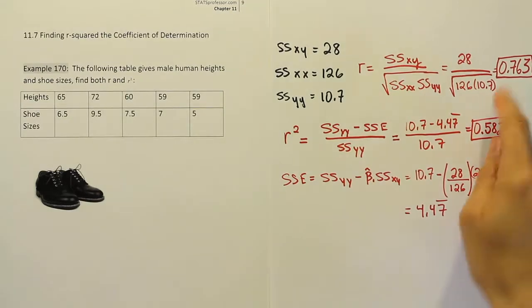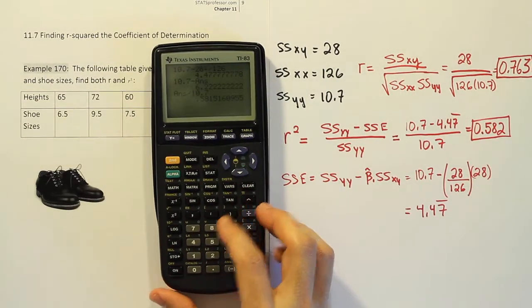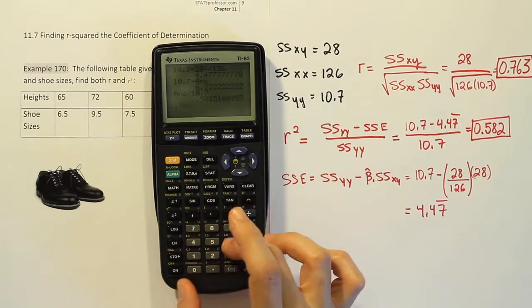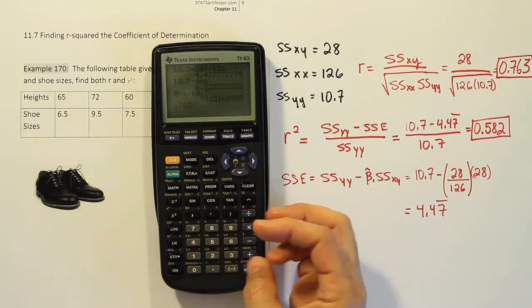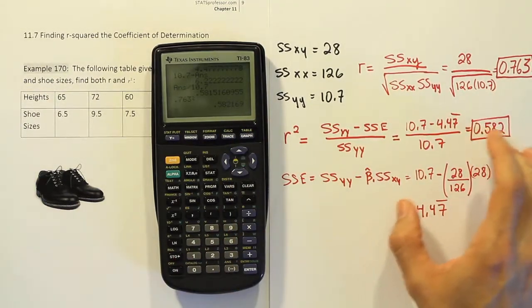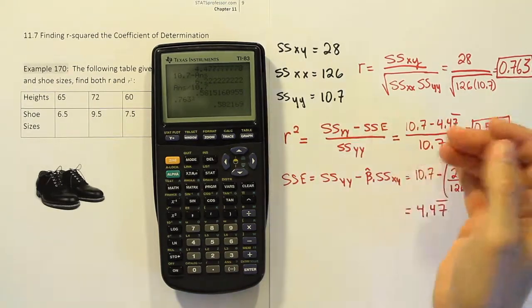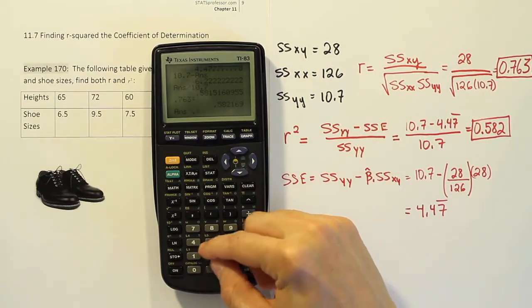Finally, last thing I want to mention is, of course, if we had squared r like we talked about before, we would get the same value. Remember, r is .763. That's a little rounded, of course, but if we square it, we see that we get .582 to three decimal places, which of course is the same answer as r squared. Likewise, if you have r squared, you could just take the square root of it, and you would end up getting r.